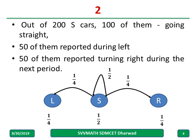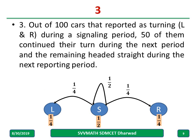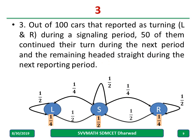Out of 100 cars that reported turning left or right during the signaling period, 50 of them continued their turning — that is 1/2 probability of remaining in the turning state (L→L or R→R). The remaining half headed straight, meaning the probability of transitioning from left to straight (L→S) is 1/2, and from right to straight (R→S) is also 1/2.